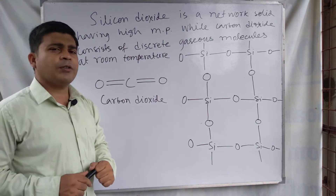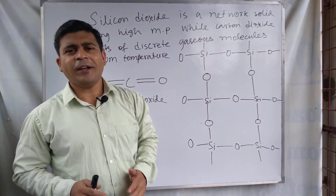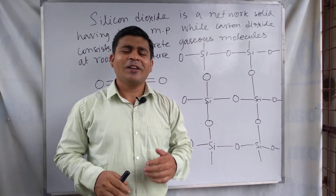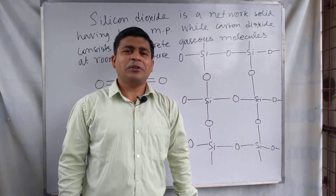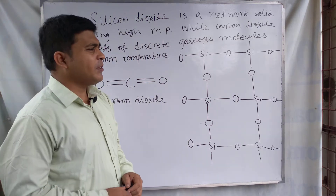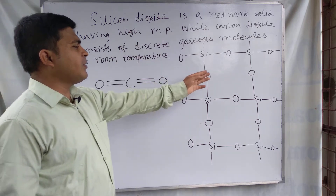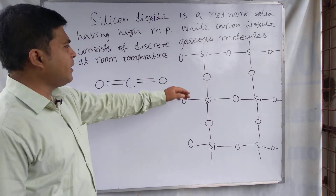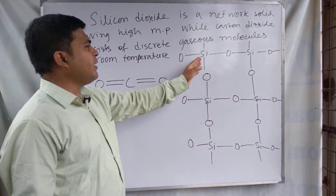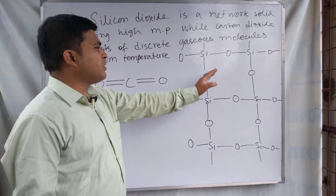Let us start the discussion about this topic. Silicon dioxide — look at this structure of silicon dioxide. In this structure, silicon dioxide is forming a polymeric network-type structure.